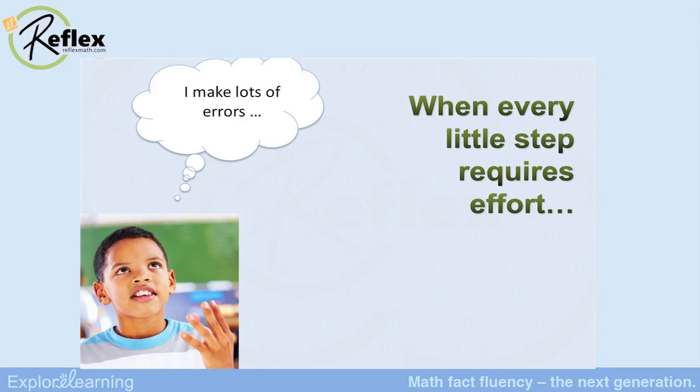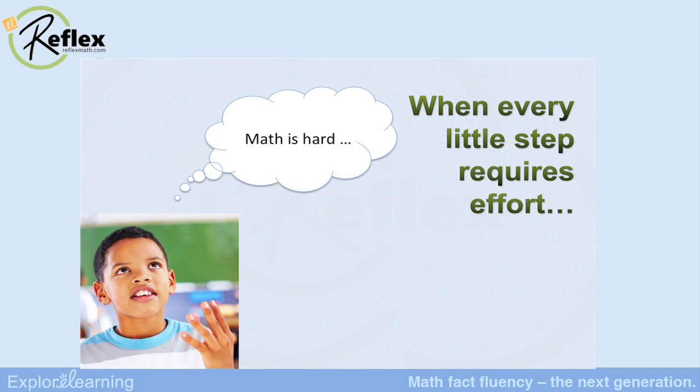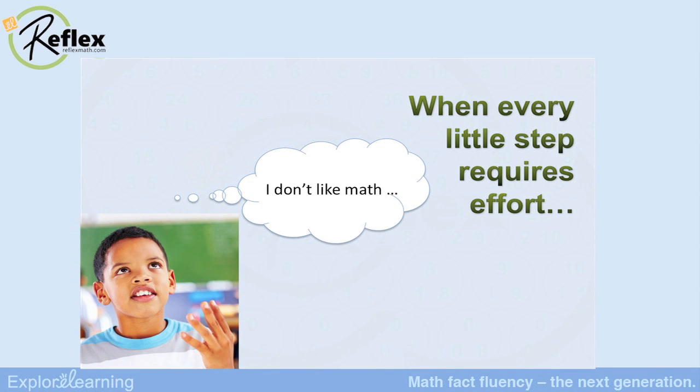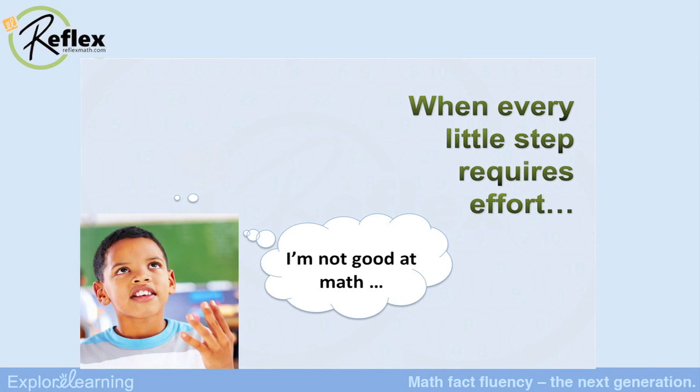So how does that feel to the child? 'I make lots of errors. Math is hard. I don't like math. I'm not good at math.' These are all familiar statements. Very important things are happening here because they're forming their opinions about the world — they're using the evidence around them to form opinions about math and its learnability. And what they're probably seeing, because math fact fluency is a very public deficit, is that some kids seem to magically get it and I'm not one of them. Must be a talent. Must be magical. Not for me.